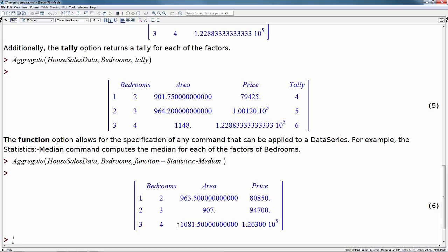So these are median values for the two, three, and four bedroom apartments. You can put in whatever function you'd like here as long as it could be applied to a data series. That's the key part of the function option.